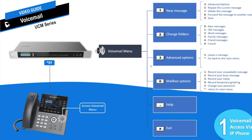After playing a new message, the user is prompted with submenu options: press 3 for advanced options, 5 to repeat the current message, 7 to delete the message, and 8 to forward the message to another user. Option 8 allows users to transfer a voicemail from their mailbox to another extension's mailbox — useful when the voicemail needs to be shared or forwarded to the intended recipient.